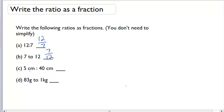Now for the last two examples, notice that I now have units. Centimeters, centimeters for the first one, and grams, kilograms for the second one. We have to make sure that the units are the same. In part C, I have centimeters and centimeters, so there's no issue. I can write that as 5 over 40.